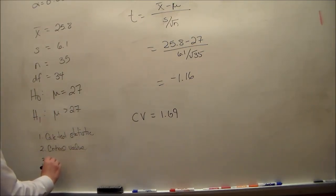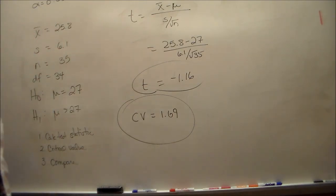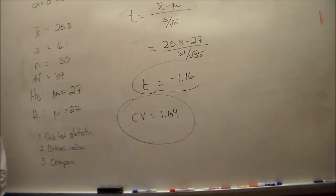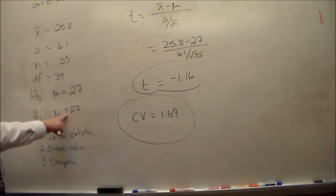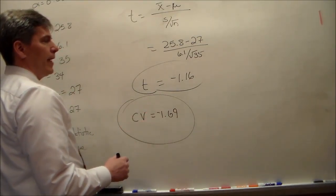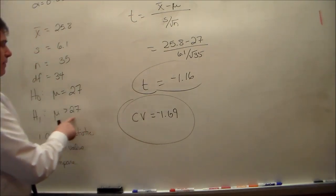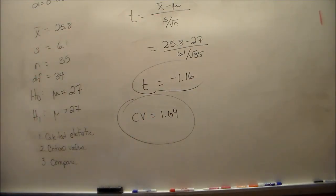And then part 3 is compare. Our test statistic is here, our critical value is here. Since the test statistic is not more extreme than the critical value, we fail to reject the null hypothesis. In short, t is not greater than cv. Because the alternative is greater than, we care about whether t is greater than cv. Because t is not greater than cv, we fail to reject the null hypothesis. We conclude that there is not sufficient evidence that the average corrosion rate is greater than 27.